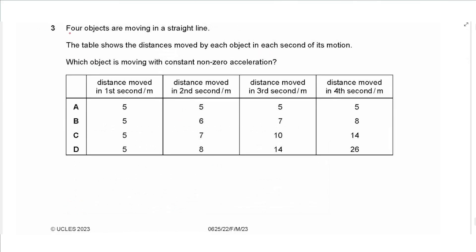Question 3: four objects are moving in a straight line. The table shows the distances moved by each object each second. For object A: 5, 5, 5, 5, 5 — all the same distance, so that's constant speed. For object B: 5, 6, 7, 8 — increasing by 1 metre per second every second, so this is constant acceleration. The answer is B.